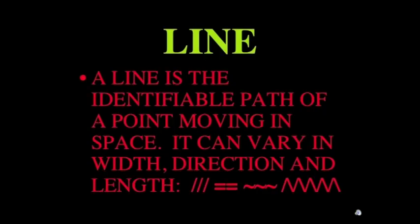The first art element we're going to talk about is line. A line is the identifiable path of a point moving in space. It can vary in width, direction, and length. That's the definition of line. But more importantly, we want to look at how line is used in real artworks.